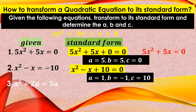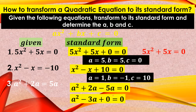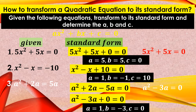Number 3: A squared plus 2A equals 5A. This is not yet equated to 0, so we transpose 5A to the left. It becomes A squared plus 2A minus 5A equals 0. Since 2A and 5A are similar terms, we combine them: A squared minus 3A equals 0. So A is 1, B is negative 3, and C is 0.